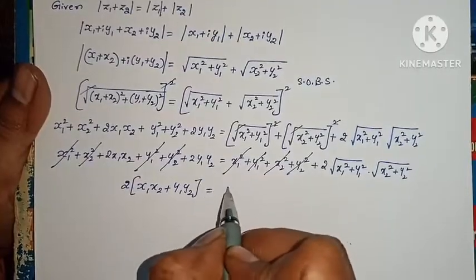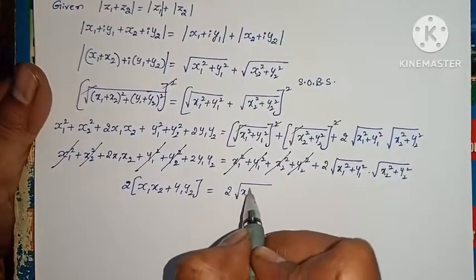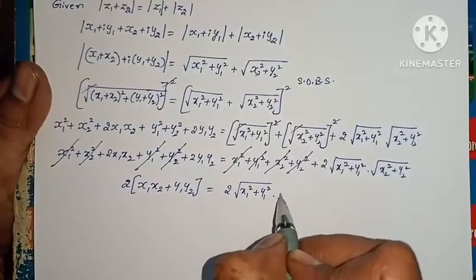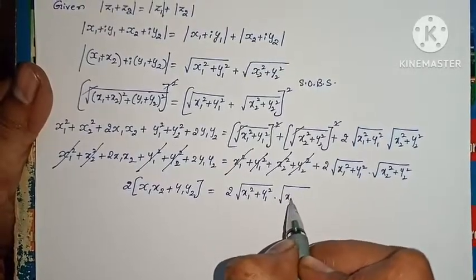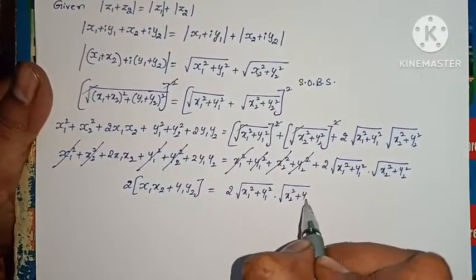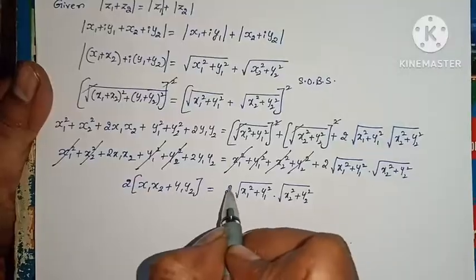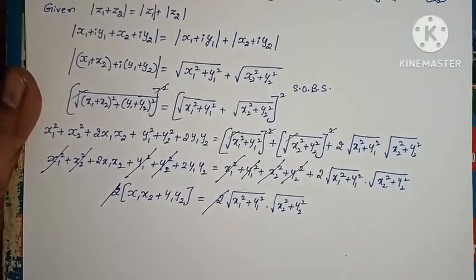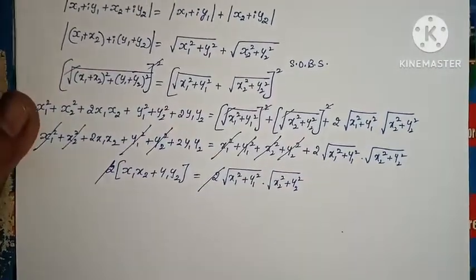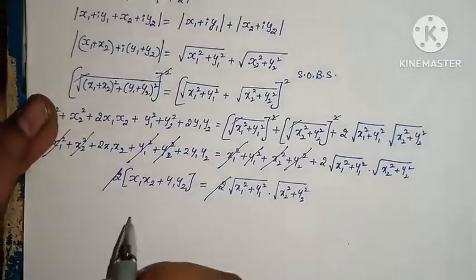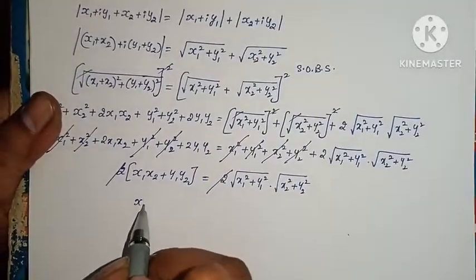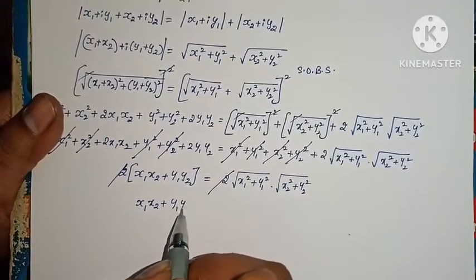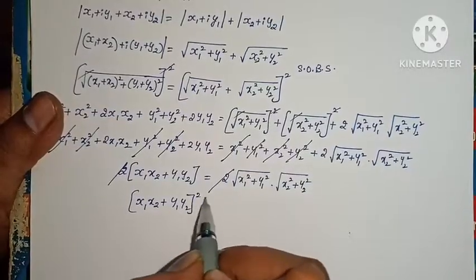After cancellation, 2 is common. So X1X2 plus Y1Y2 equals root(X1²+Y1²) times root(X2²+Y2²). Squaring both sides again: (X1X2 + Y1Y2)² equals root(X1²+Y1²) whole square into root(X2²+Y2²) whole square.